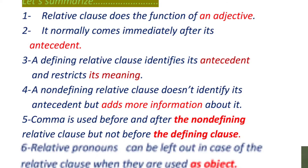Let us summarize. One: a relative clause does the function of an adjective. Two: it normally comes immediately after its antecedent. Three: a defining relative clause identifies its antecedent and restricts its meaning. Four: a non-defining relative clause does not identify its antecedent but gives more information about it. Five: commas are used before and after the non-defining relative clause but not before the defining clause. Six: relative pronouns can be left out in the case of the relative clause when they are used as an object.